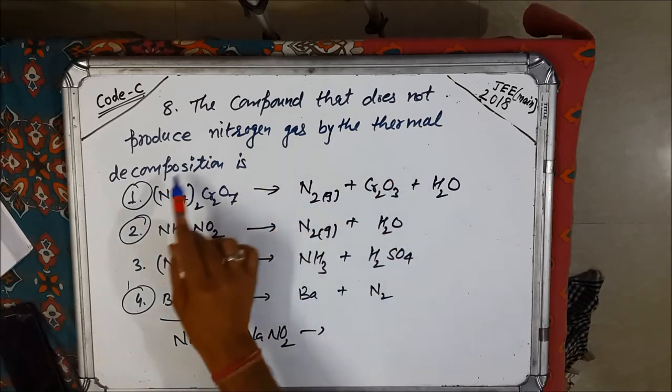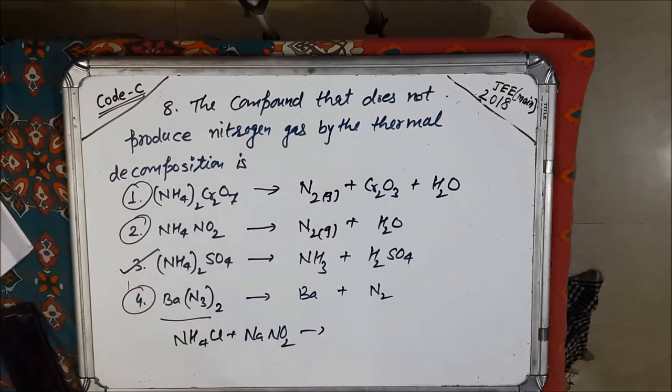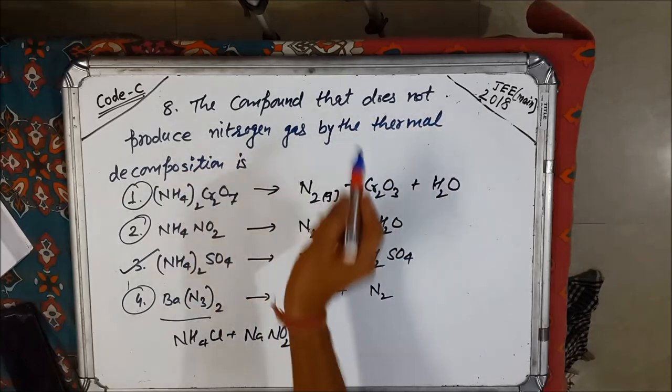So 1, 2, 3 in these cases we get nitrogen gas and this is the right option because it does not produce nitrogen gas.